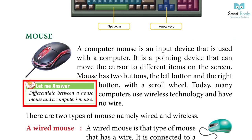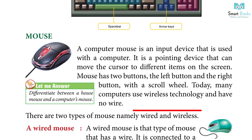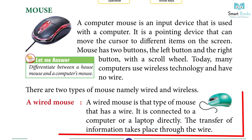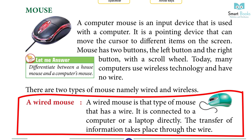Let me answer: Differentiate between a house mouse and a computer mouse. There are two types of mouse: wired or wireless. A wired mouse has a wire and is connected to a computer or laptop directly. The transfer of information takes place through the wire.